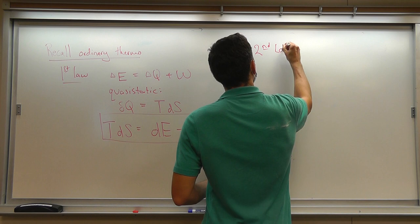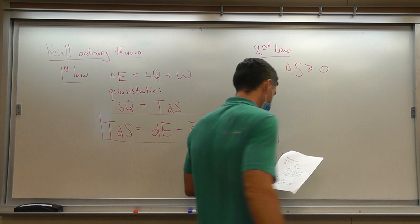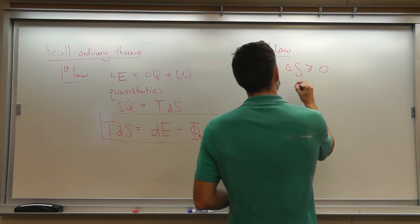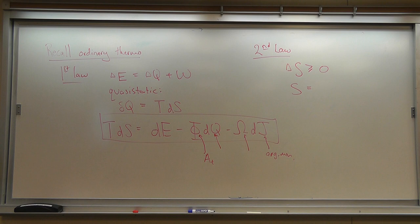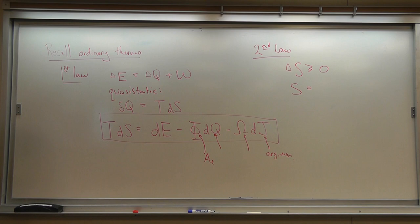Then there's the second law. The second law of thermodynamics says that the entropy can only increase in physical processes. What is the entropy? Originally in ordinary thermodynamics, entropy was defined somewhat mysteriously by equations like this one — basically by following equations like this around in phase space.